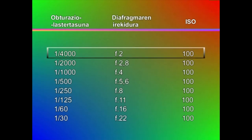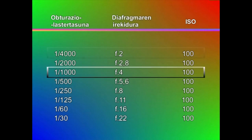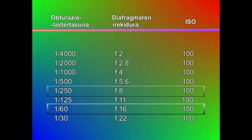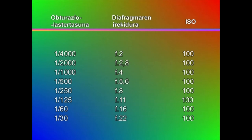ISO balioa 100 delarik: 1/4000ko obturazio lastertasunari F8 irekidura dagokio; 1/1000koari F4; 1/250ekoari F8; 1/60koari F16. Horra hor argazki kamerek egiten dituzten kalkuluak haien menuko era automatikoa aukeratzen dugunean.